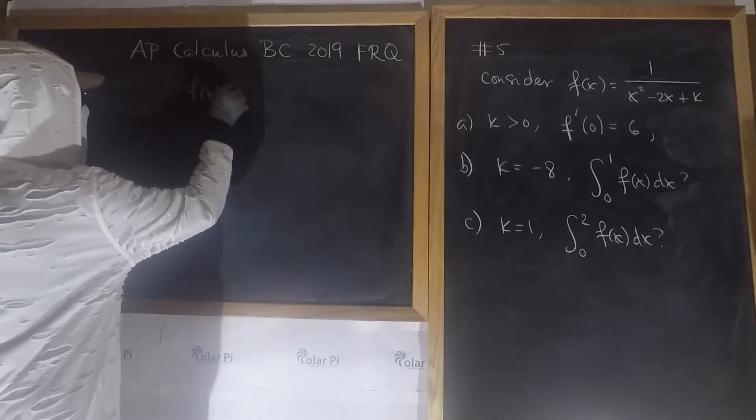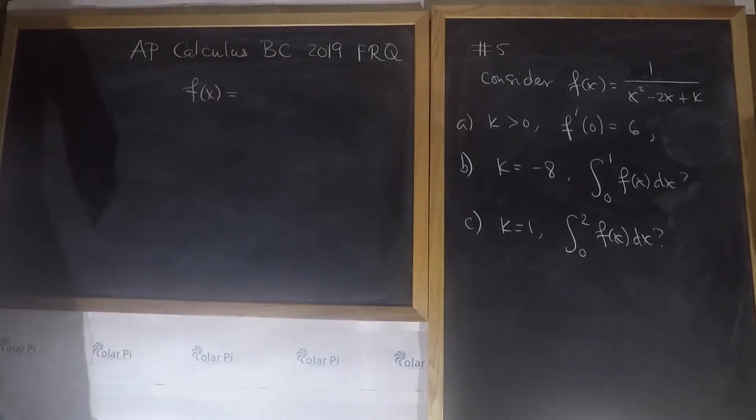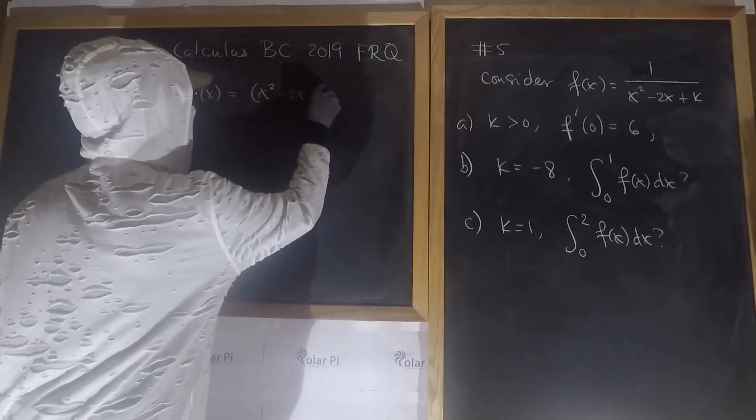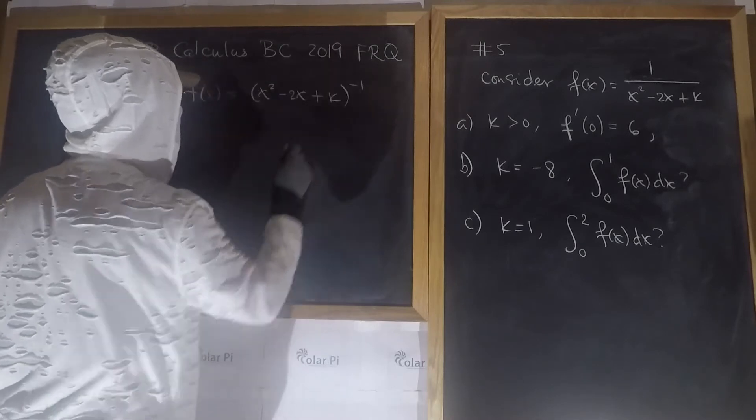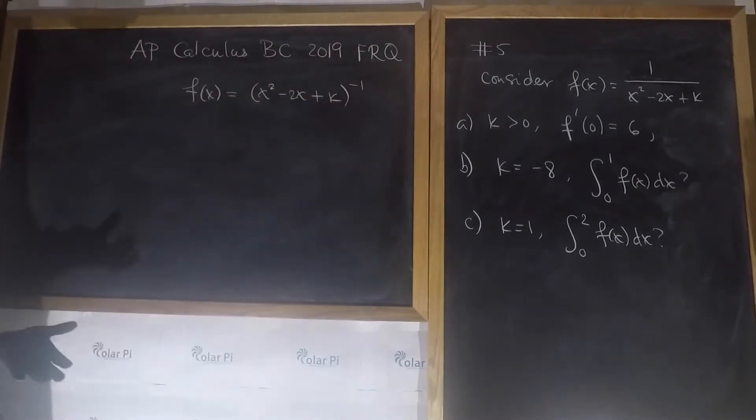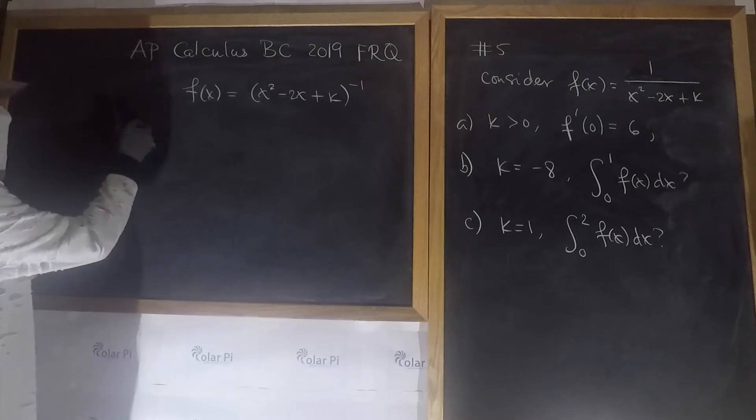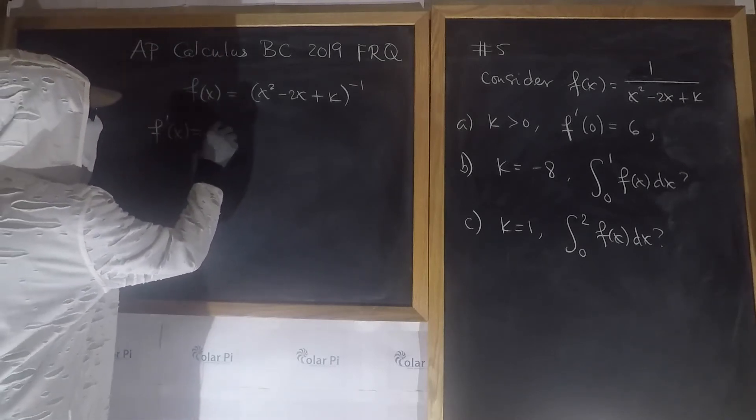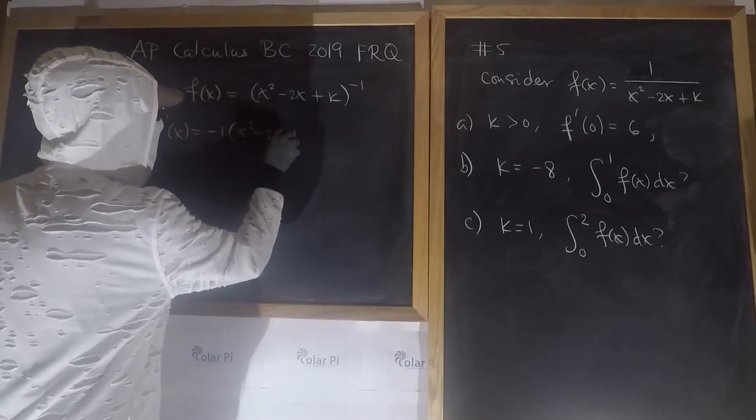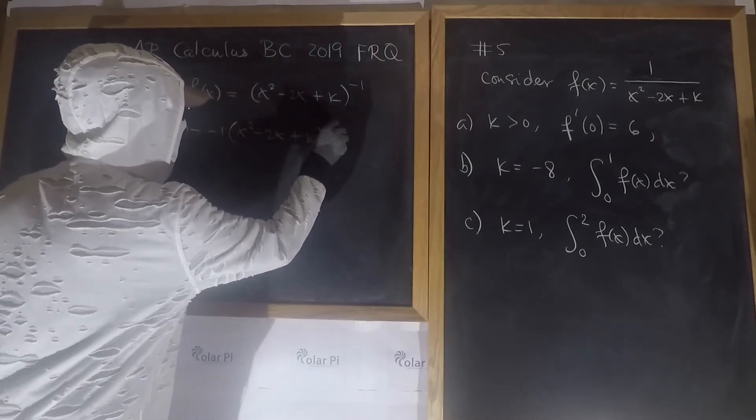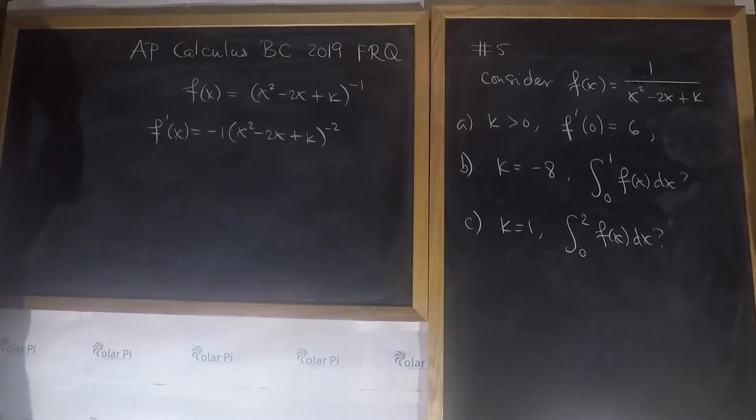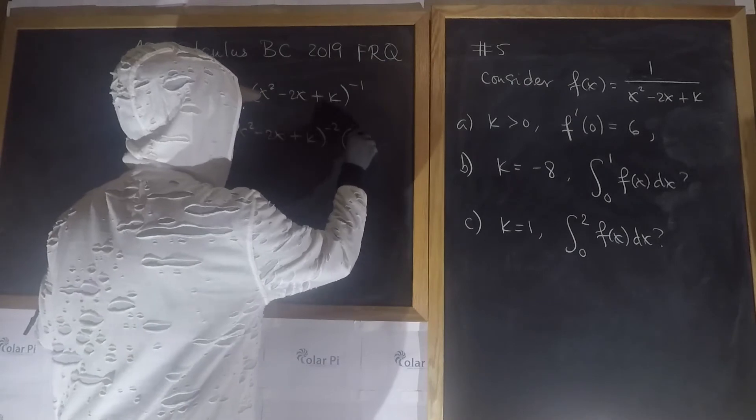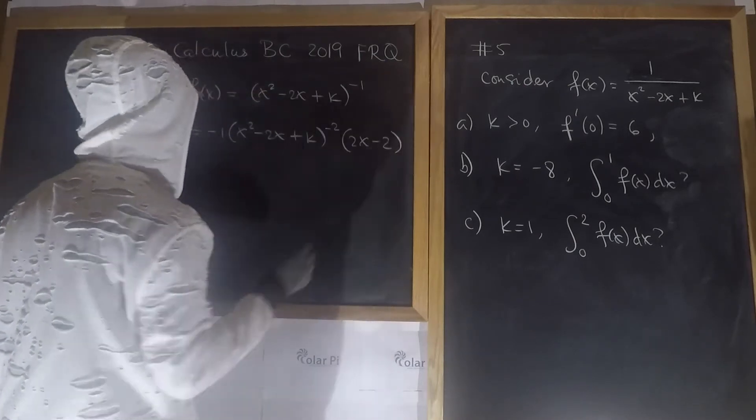To find f prime conveniently, let's write f of x as x squared minus 2x plus k to the power negative 1. That way we don't have to do quotient rule, we can do power rule and chain rule. So f prime of x equals negative 1 times x squared minus 2x plus k to the power negative 2. That's the power rule part, and now chain rule, so we multiply by the derivative, which is 2x minus 2.